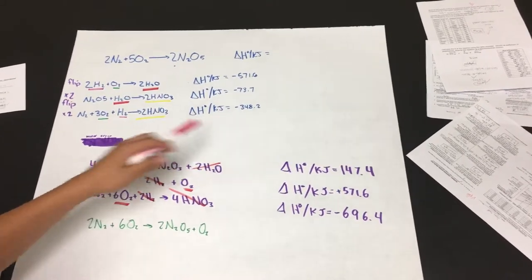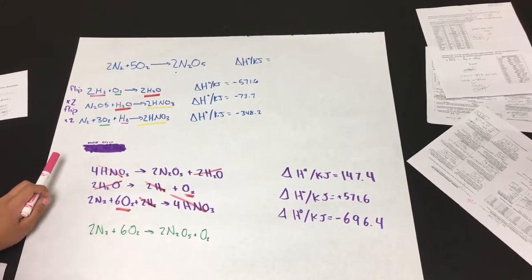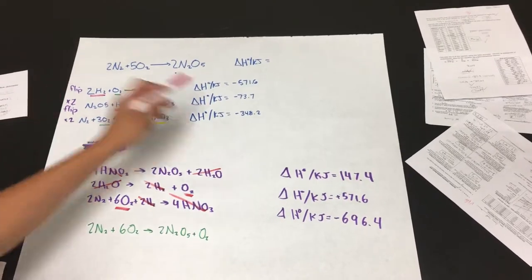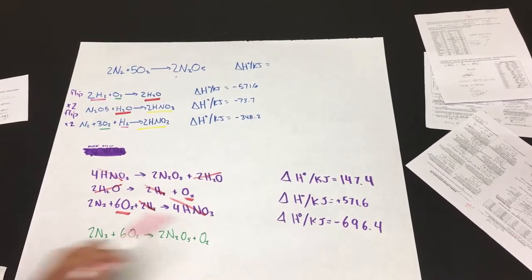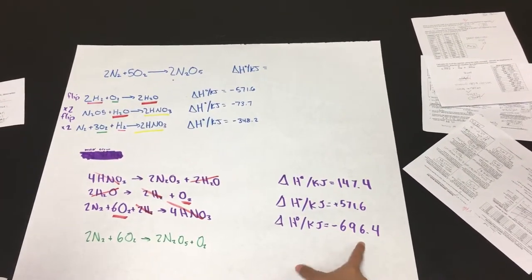And the specific heat of that was negative 348.2. And since we just multiplied by 2, that would be multiplied by 2. So it would be negative 696.4.